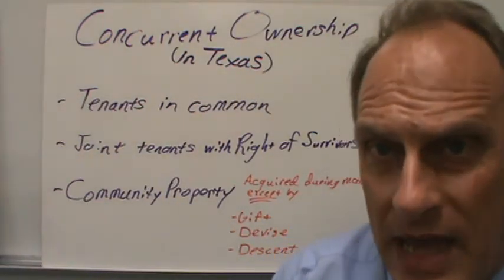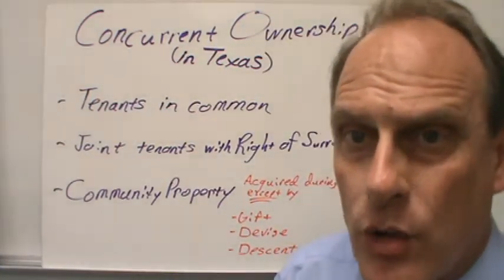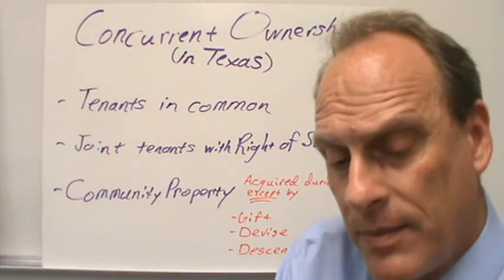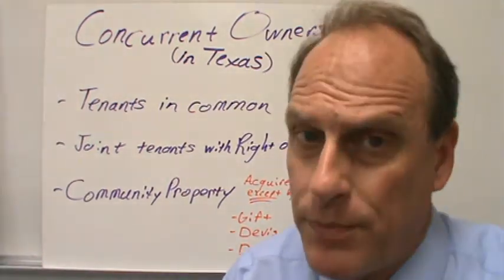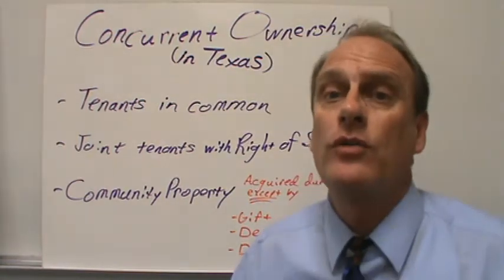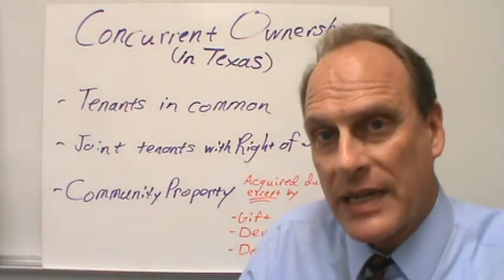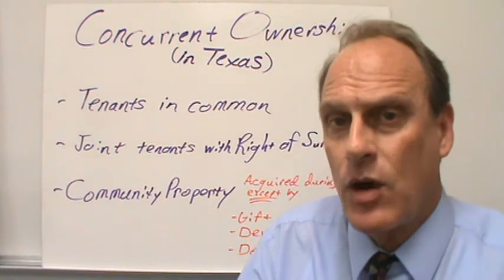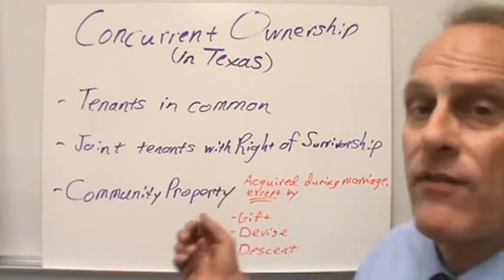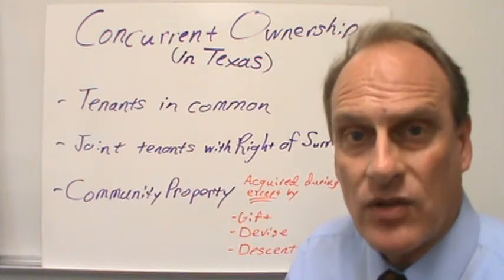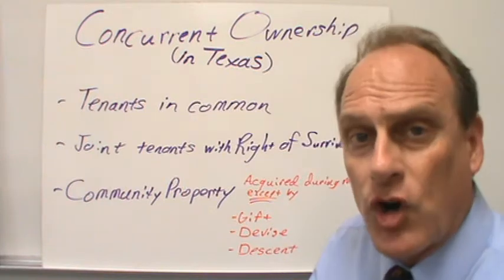Another concept we need to have a good understanding of is concurrent ownership. That means a piece of property — whether real or personal — could be owned by more than one person concurrently, at the same time, and they may own it in various shares. There are several ways in Texas that we may encounter concurrent ownership.